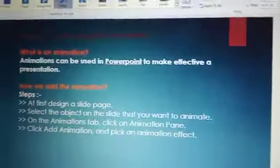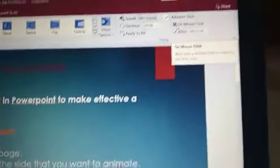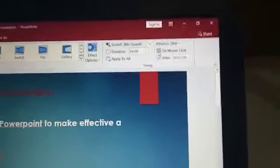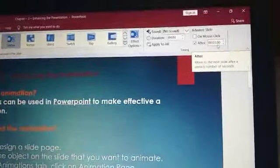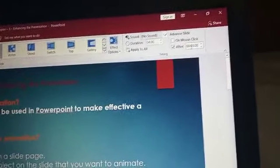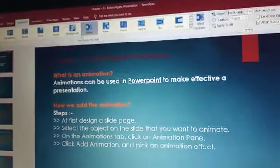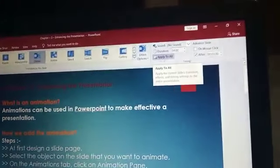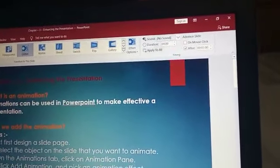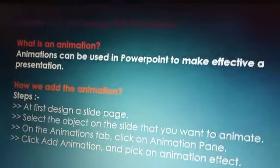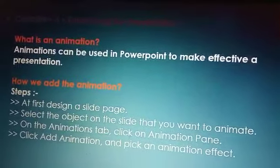If you want the transition to happen automatically rather than on mouse click, uncheck 'On Mouse Click' and select the 'After' option, then set your timing — in this example, three seconds. I have selected only one slide and applied the Glitter effect, but using the 'Apply to All' button, this can be applied to all slides. In slideshow view, you can see the slides change automatically one by one with the transition effect.